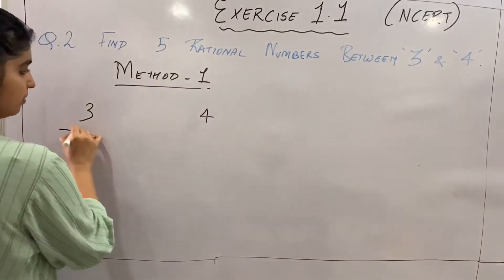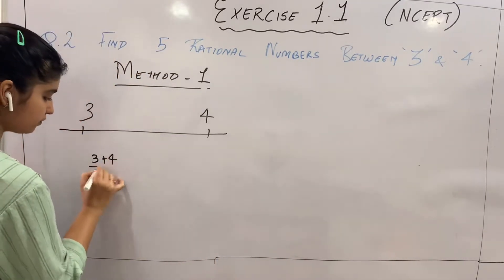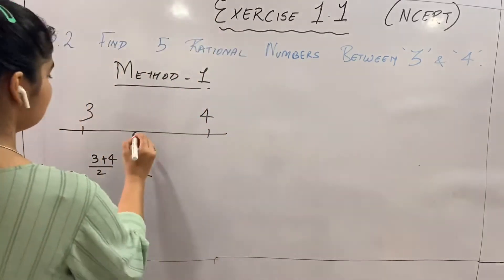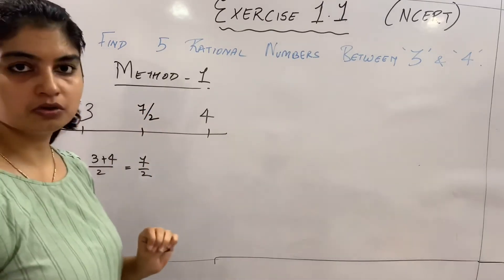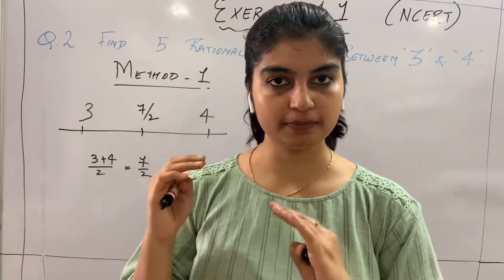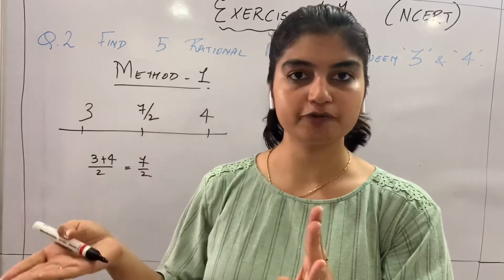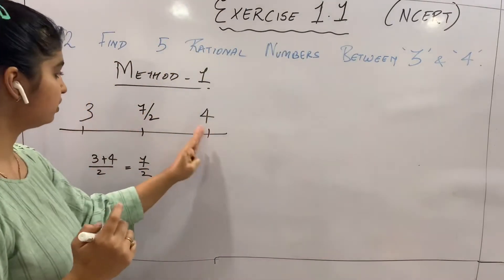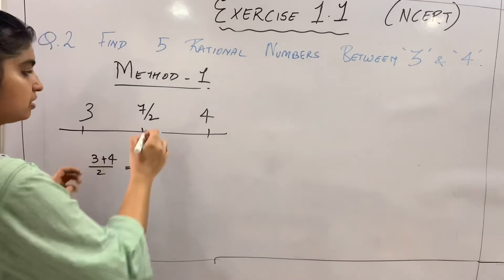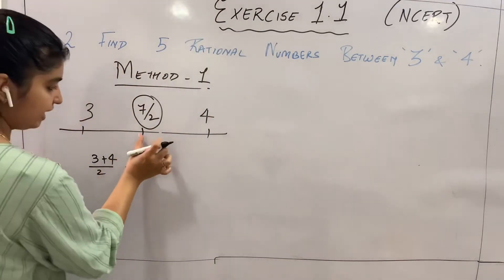Method 1: If we want to find five rational numbers between 3 and 4 on the number line, we can find the average of both. The average of 3 and 4 is (3 + 4) / 2 = 7/2, which is located at the center between them. In decimal, 7/2 = 3.5, which comes exactly at the center. So 7/2 is one rational number between 3 and 4. We still need four more.